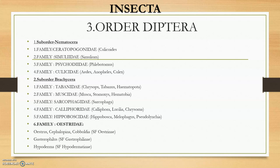The biggest and most important order under class Insecta is order Diptera — the two-winged flies, commonly called dipterans. When classifying Diptera, we have suborder Nematocera and suborder Brachycera as the main classifications under order Diptera.